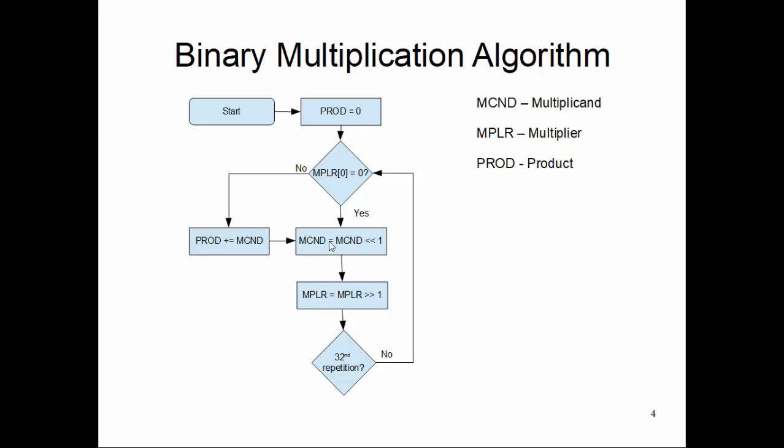The underlying assumption is that the multiplicand is stored in a register with left shift capability and that register is double in size. So if the multiplicand is 32 bits, we are storing this initial multiplicand in a 64-bit register with left shift capability.